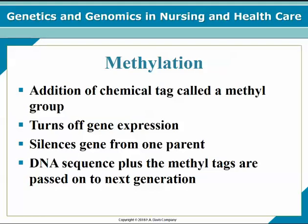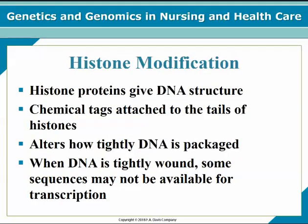Methylation is the addition of a chemical tag called a methyl group. It turns off gene expression and silences a gene from one parent. The DNA sequence plus the methyl tags are passed on to the next generation. Methylation may have a profound impact on several regulatory elements, altering transcription beyond just silencing promoters. When DNA is tightly wound it may turn gene expression off, and when loosened it may allow the gene to be expressed or turned on.